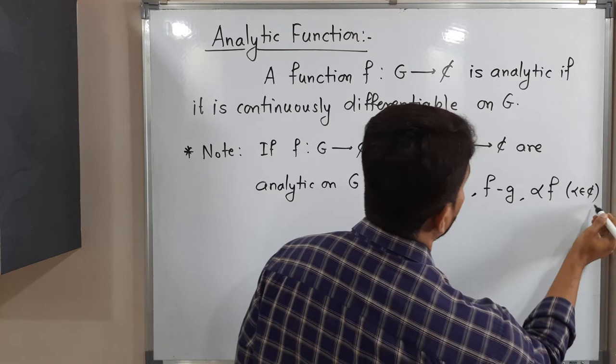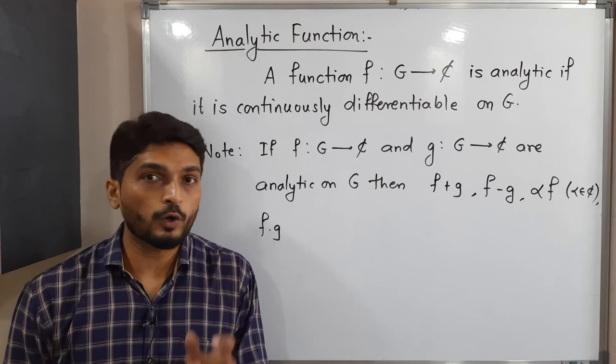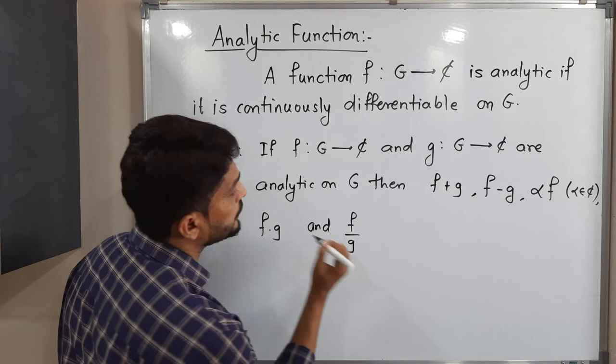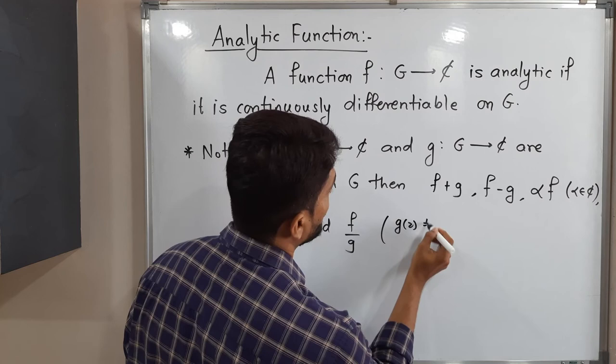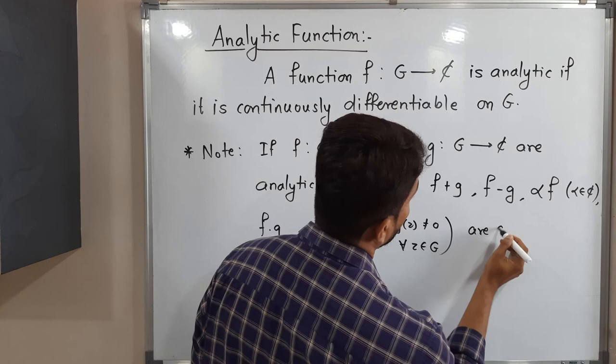Next, f into g, the product of two analytic functions, is again analytic on the same set G. And f upon g is again analytic on G, provided g of z is not equal to zero for all z belongs to G.